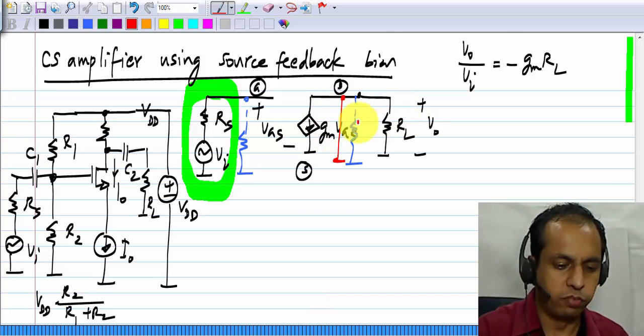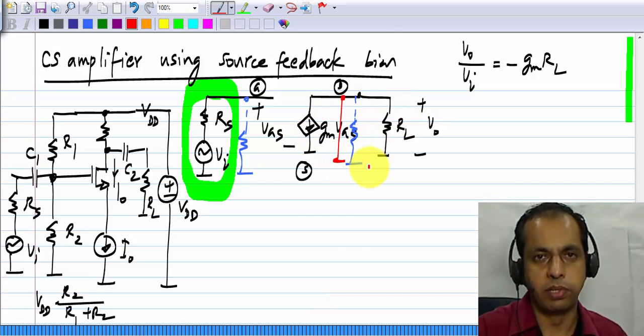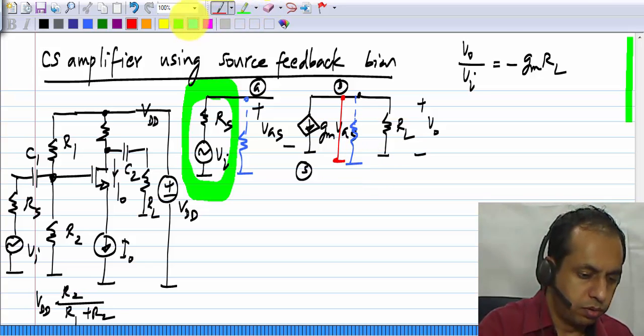Basically, if we connected directly to Vdd, we will have a short circuit here, right, from the drain to ground. So, then, clearly, the gain will be zero. It will be gm times the zero resistance.